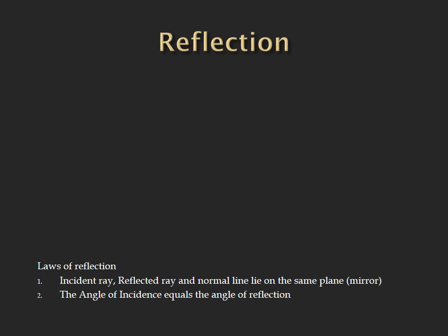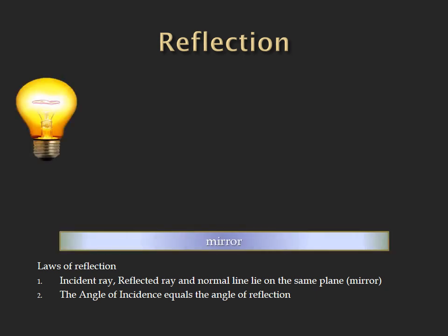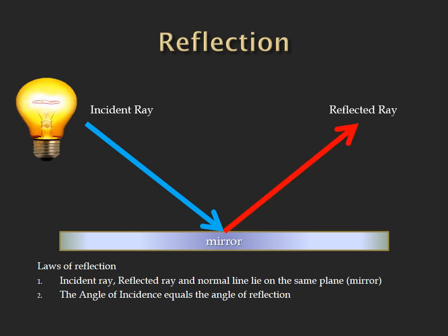To understand image formation, we must be familiar with how reflection happens. We must distinguish the two types of light rays. The light ray that strikes the mirror is called the incident ray, while the light ray that leaves the mirror is called the reflected ray. Drawing an imaginary line from the common point of reference of these two light rays forms the normal line. As the first law of reflection states, the incident ray, reflected ray, and normal line lie on the same plane.